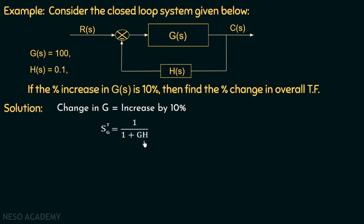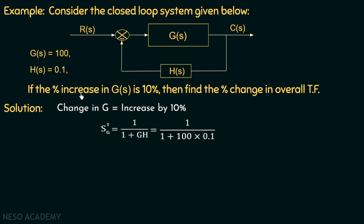We are given the values of G and H in the example. So if we put these values, we will have 1 over (1 + 100 × 0.1), where the value of G is 100 and the value of H is 0.1. Solving this, we get the sensitivity of the transfer function with respect to gain equal to 1 over 11.